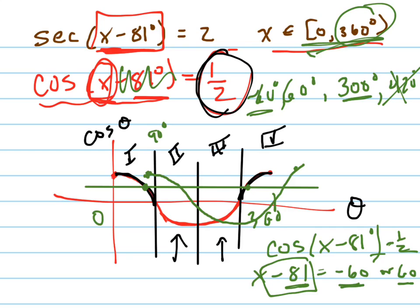When I add 81, I get 21 degrees. x equals 21 degrees. And when I add 81 to 60, I get 141 degrees. Those are my two solutions.